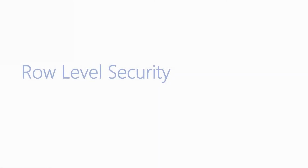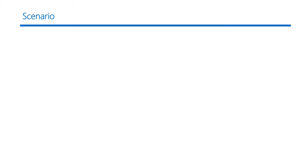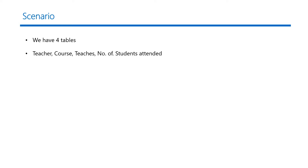In this video we will look at another common scenario of implementing role level security in many-to-many relationships. We have four tables: the teacher table, the course table, the teachers junction table, and the number of students attended table. The teacher table holds the list of teachers and the course table holds the list of courses. The teachers table contains which teacher teaches a particular course, so for example if I taught chemistry and biology, the teachers table will contain two records.